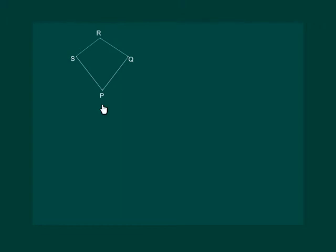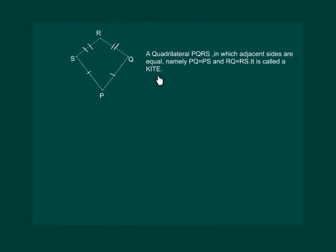Now look at quadrilateral PQRS in which adjacent sides are equal — that means PQ equals PS and RQ equals RS. It is called a kite. Also note that a kite is not a parallelogram.